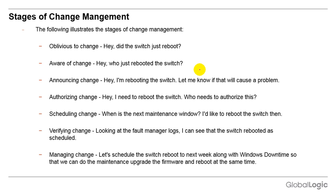Sometimes you are aware of the change. The network team rebooted the switch because they wanted to ensure that affected services get restored. This is being aware of change — you know the switch got rebooted and you want to know who did this, because it was not previously communicated.